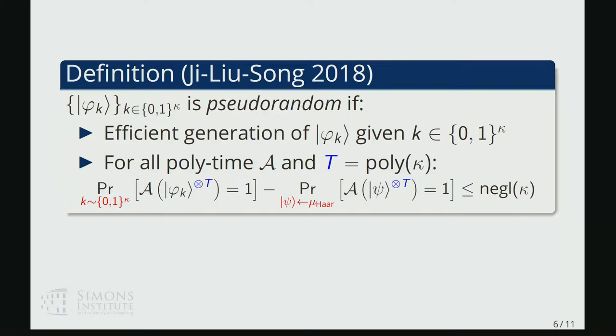you're trying to mimic the uniform distribution over n-qubit quantum states, the Haar measure. The other difference in blue is that in general,